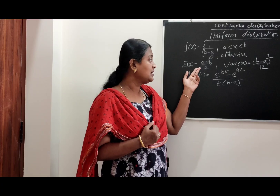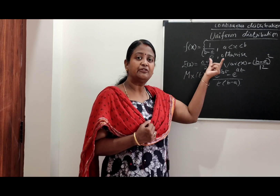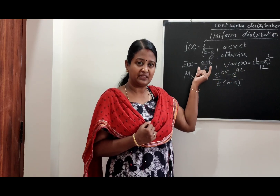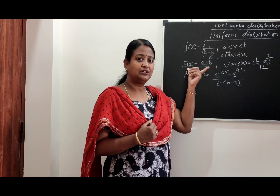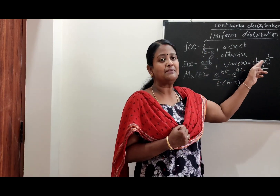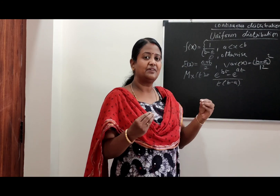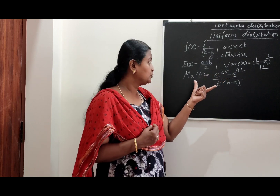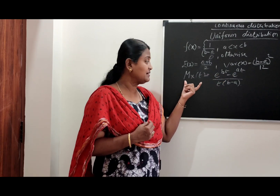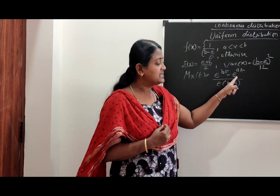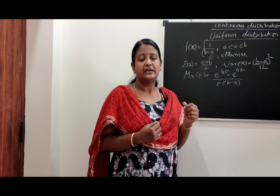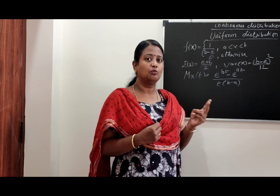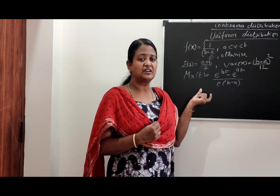The average mean value is (a + b)/2, where a is the interval starting point and b is the interval ending point. The variance is (b - a)² divided by 12. Next, the moment generating function: M_X(t) = (e^(bt) - e^(at)) / (t(b - a)). These are simple derivation values.